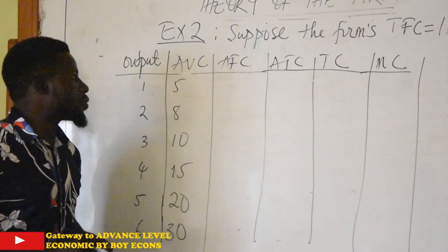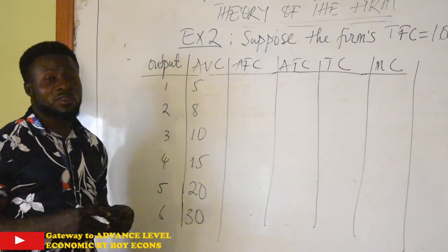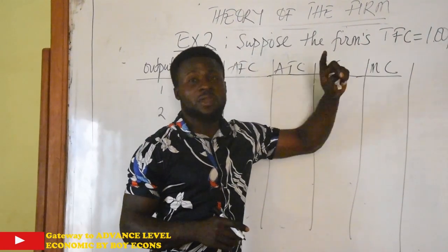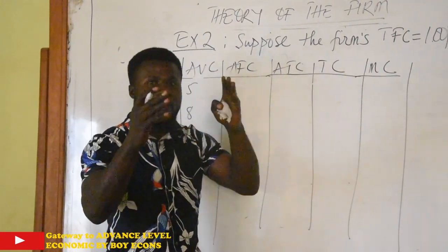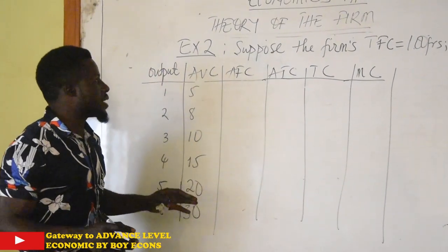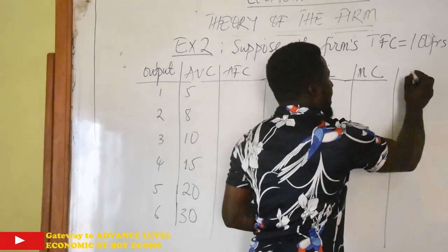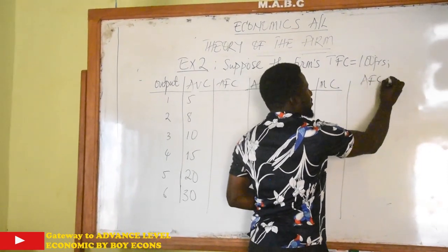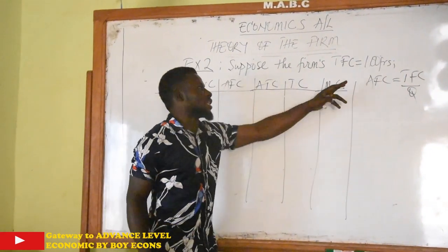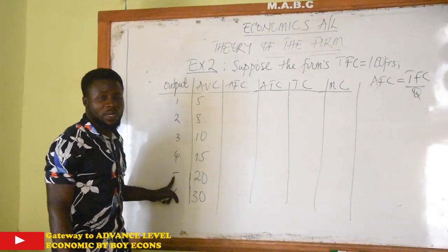It is very simple to go about this. We know that our total fixed cost does not change as output changes. That is why they have given us only one total fixed cost throughout the various output levels — total fixed cost is constant. Average fixed cost is gotten by total fixed cost divided by output. So we are going to take 100 and divide by the various output levels.